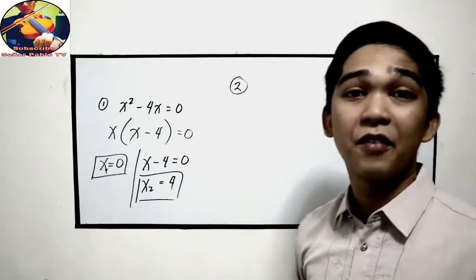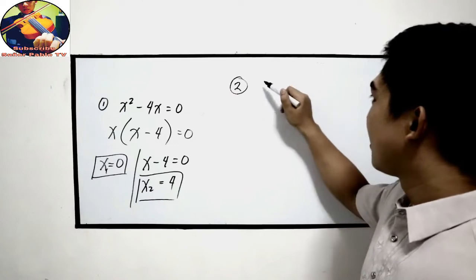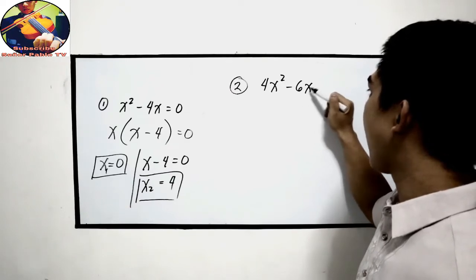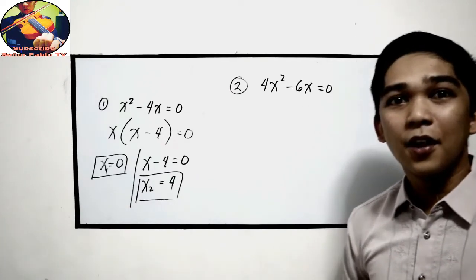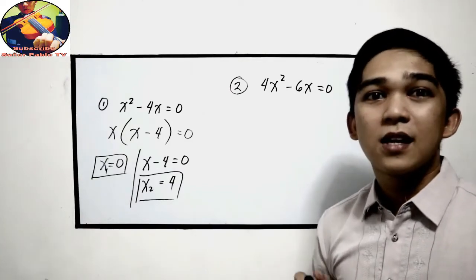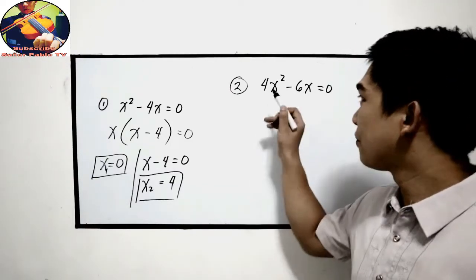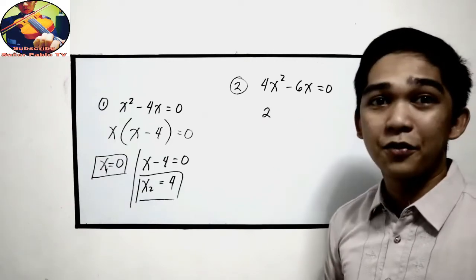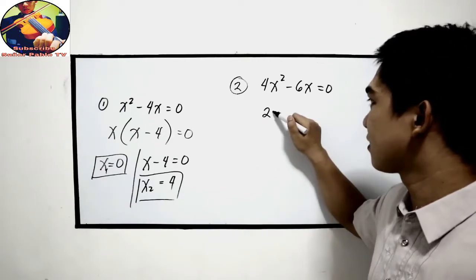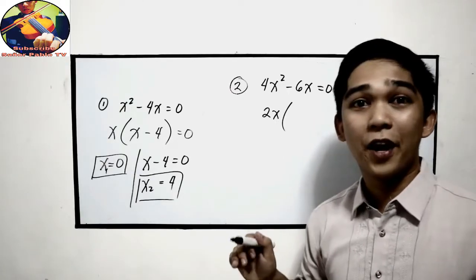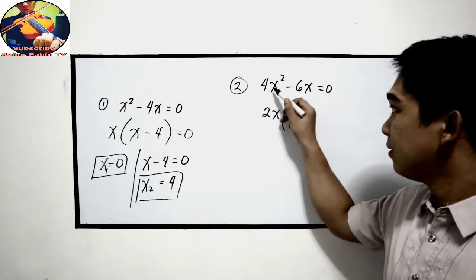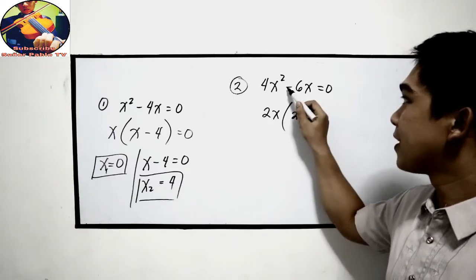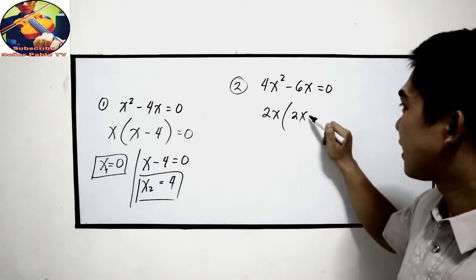To further understand, let's have example number 2: 4x squared minus 6x equals 0. Find the common factor. Starting with the coefficients: 4 and 6, the common factor is 2. For the variable, the lowest exponent is x, so copy x. To find the other factor, divide: 4x squared divided by 2x is 2x. Negative 6x divided by 2x is negative 3.